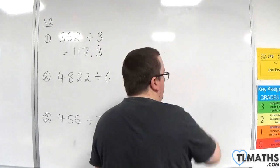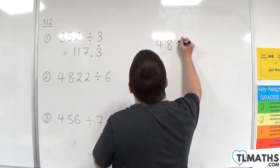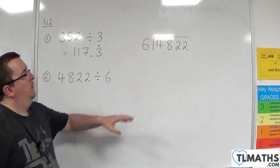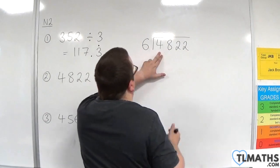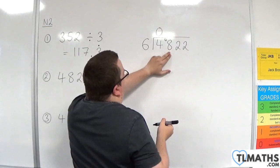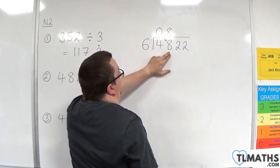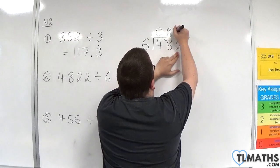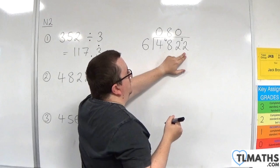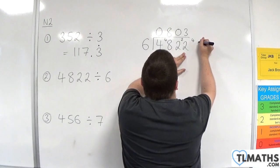Let's take a look at the second example. We have 4822 divided by 6. 6 into 4 goes 0 with 4 left over. 6s into 48, well 6 times 8 is 48, so that goes in cleanly. 6s into 2 go 0 with 2 left over. 6s into 22 go 3. 3 times 6 is 18 with 4 left over.